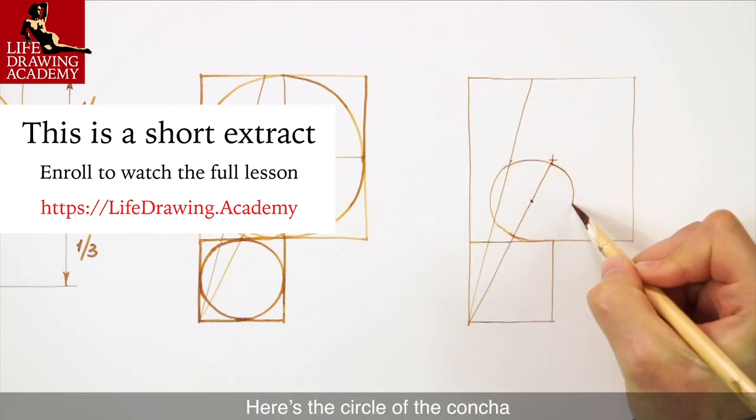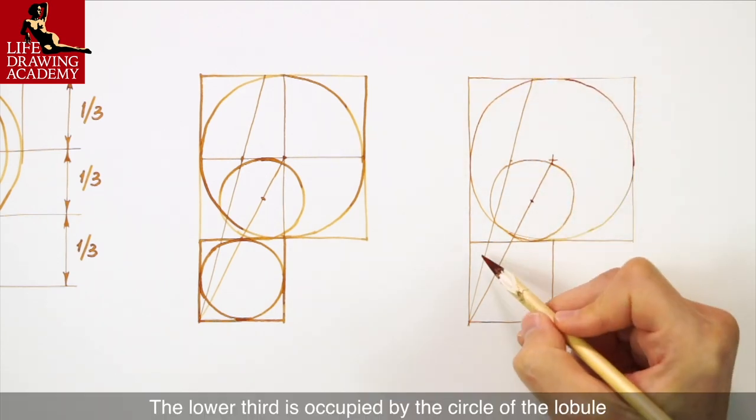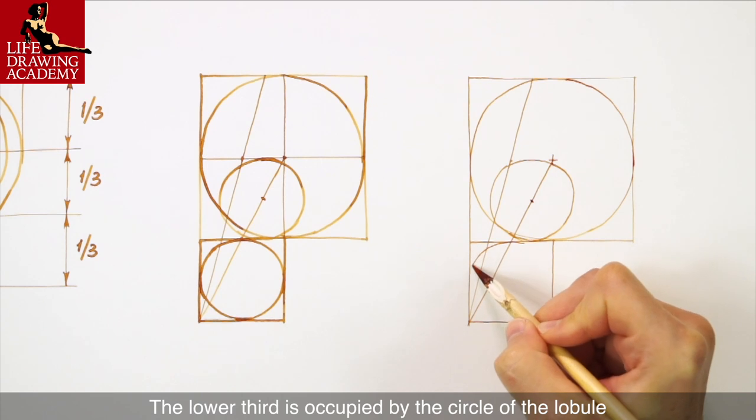Here's the circle of the concha and the big circle of the helix. The lower third is occupied by the circle of the lobule.